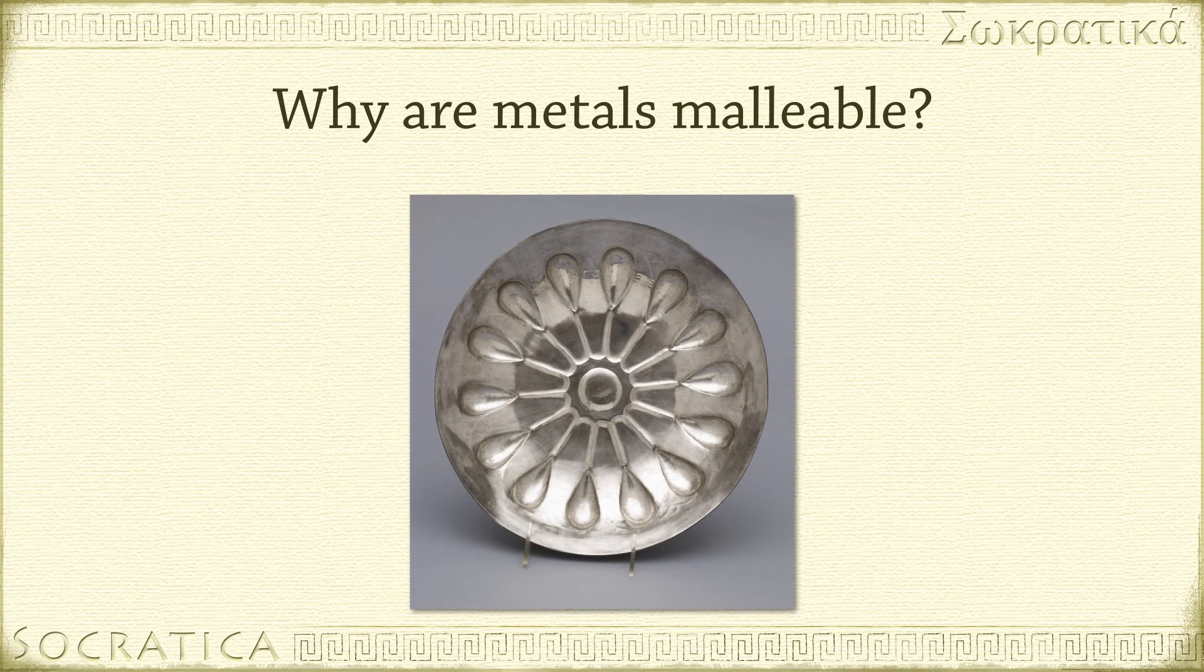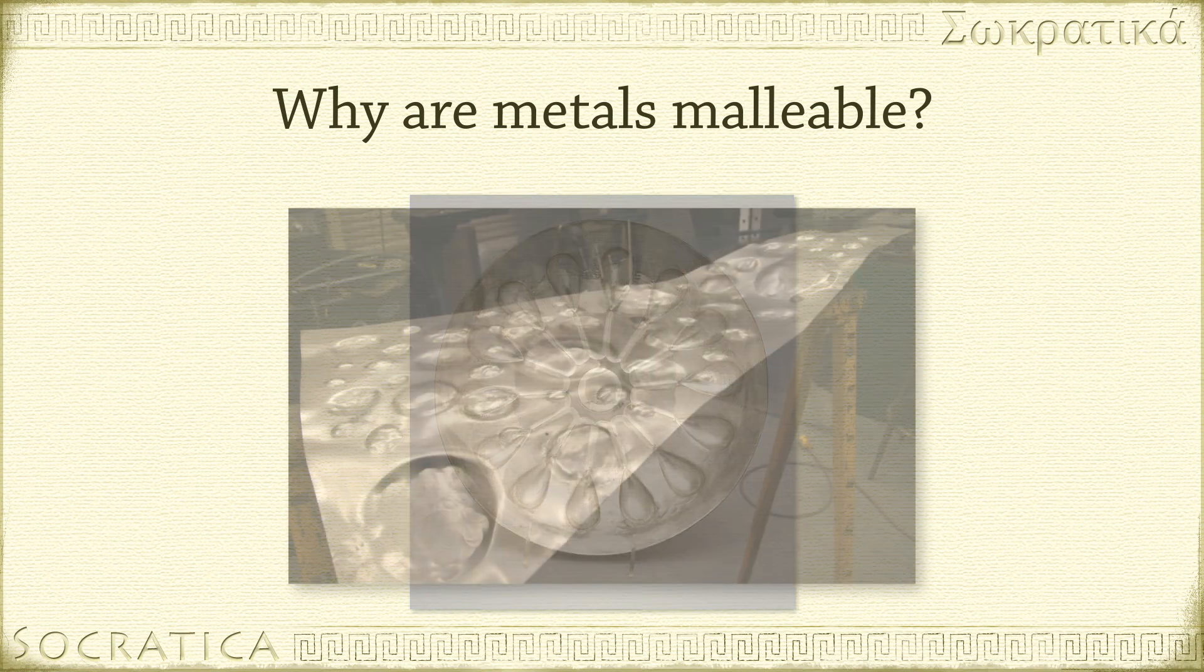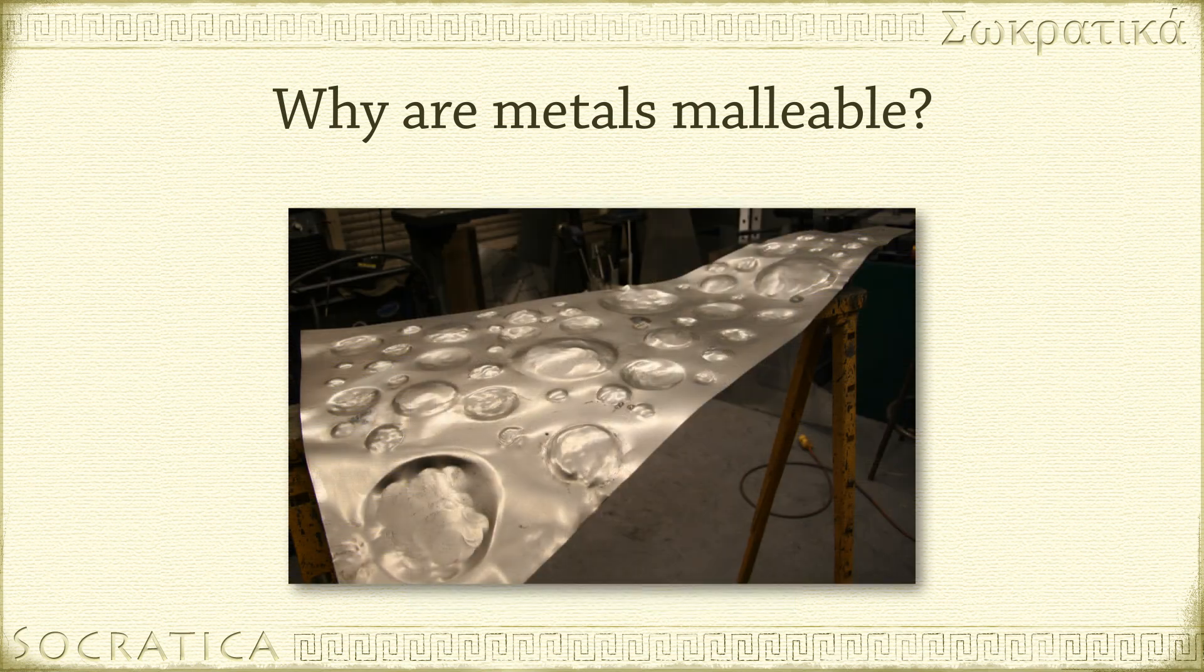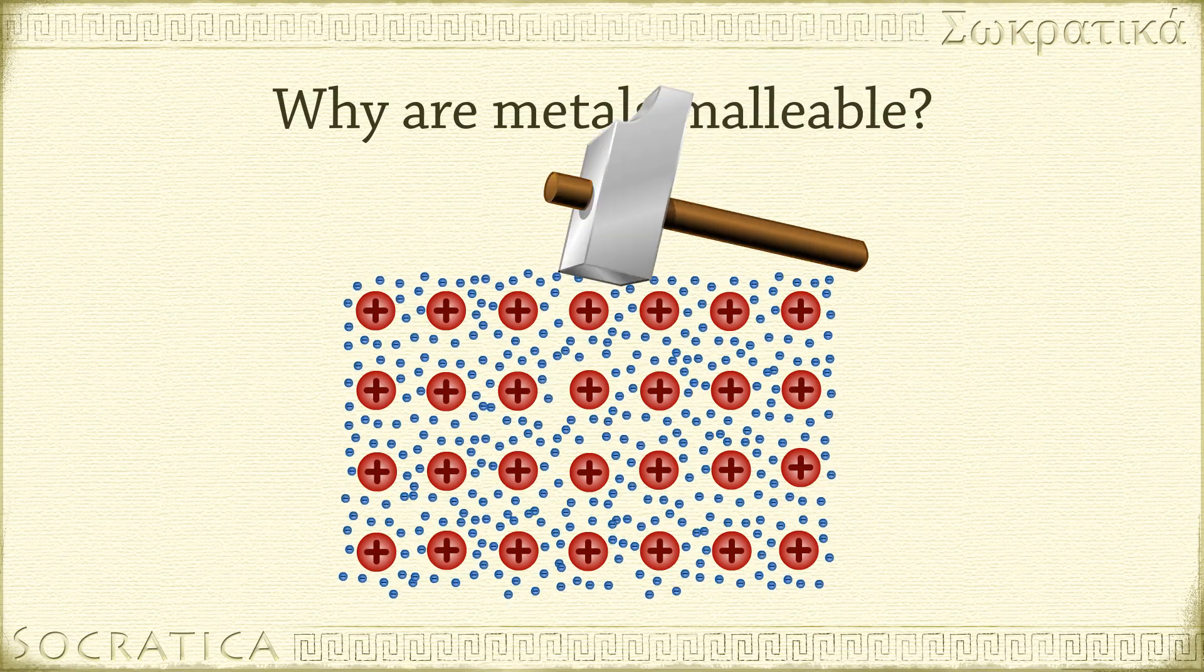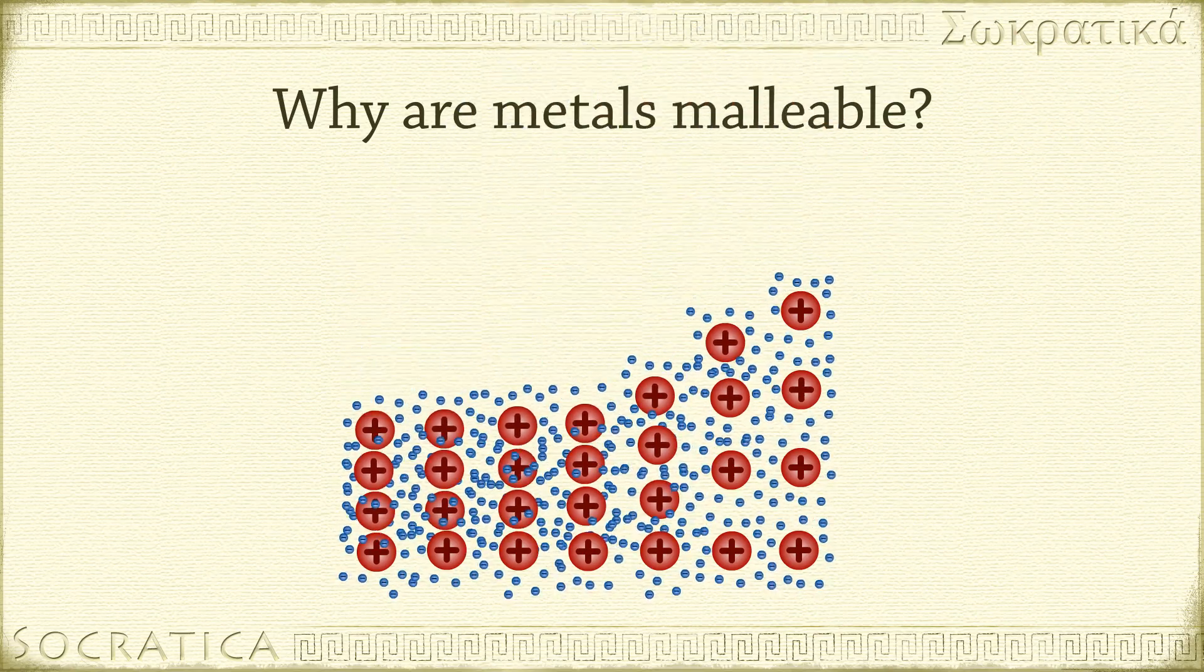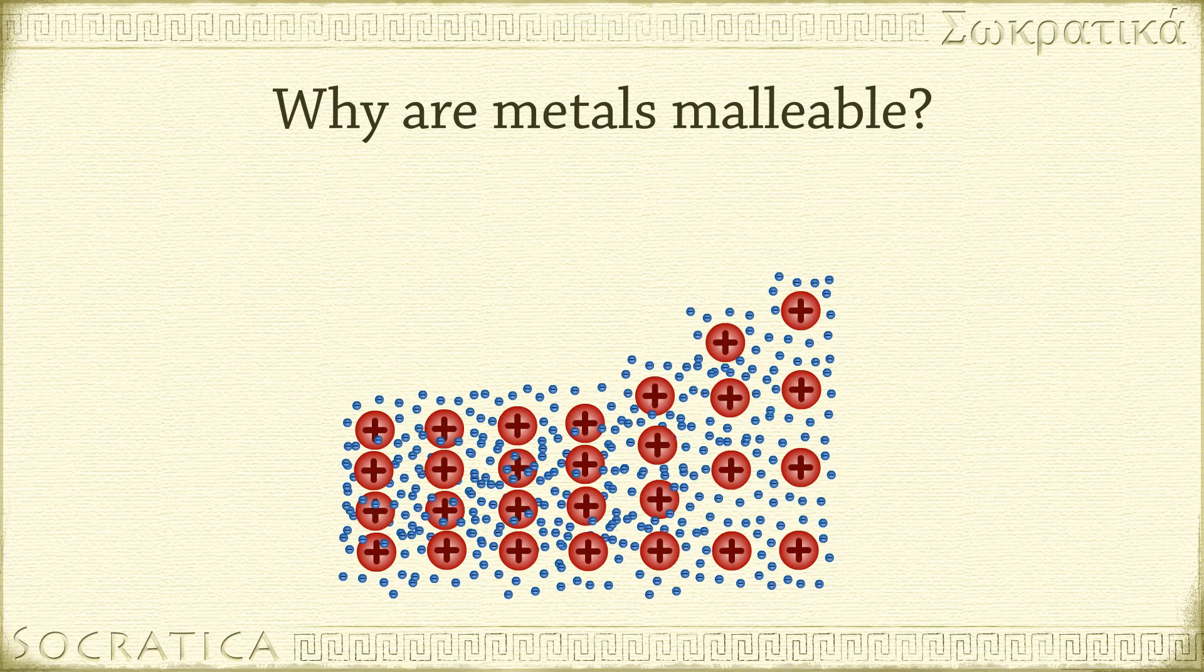In contrast, if you hit a metal with a hammer, it doesn't break, it just dents. Metals are able to deform in response to an applied force. The mobile sea of electrons shields the cations from each other, preventing violent repulsion and allowing the metal to change shape.